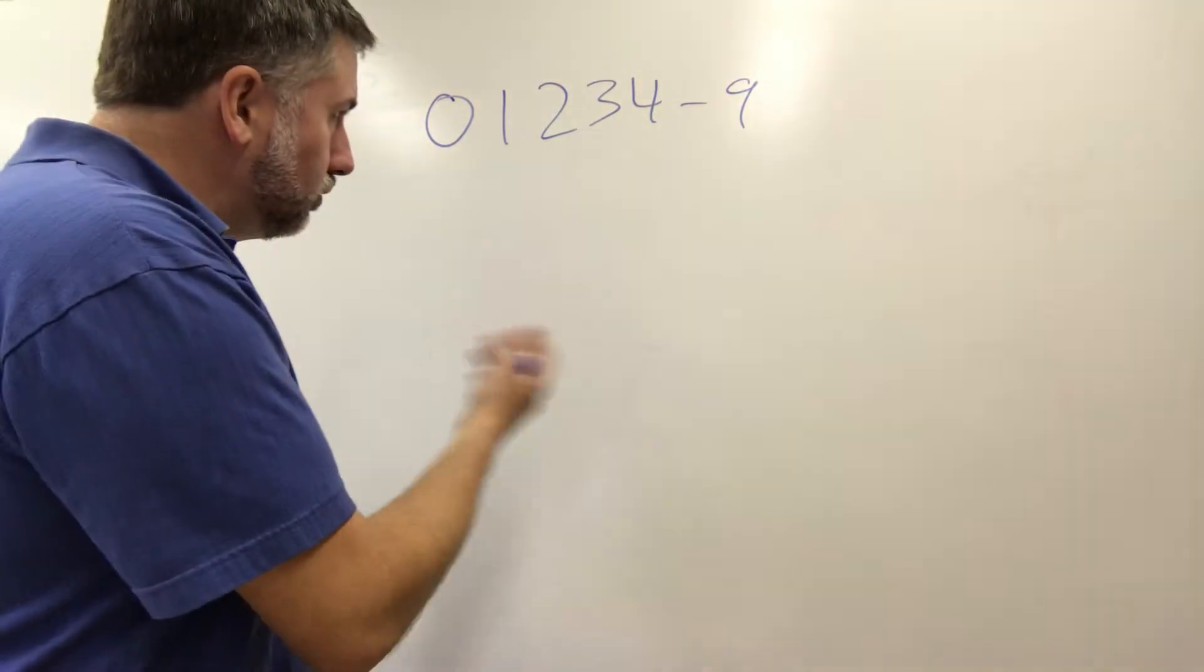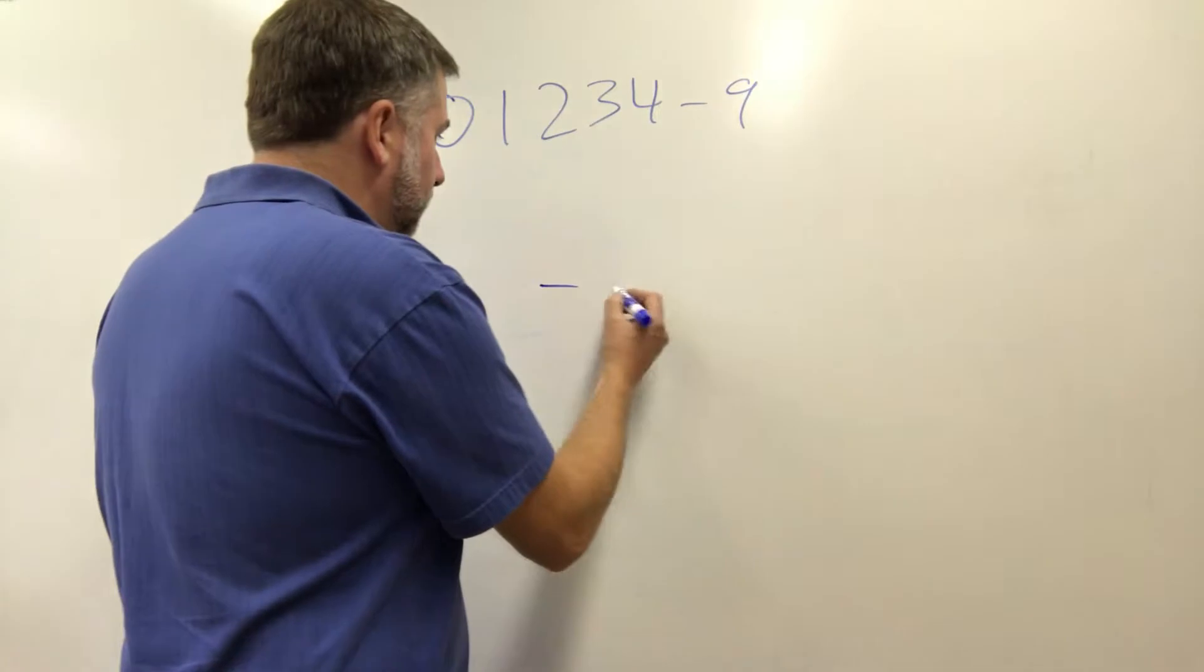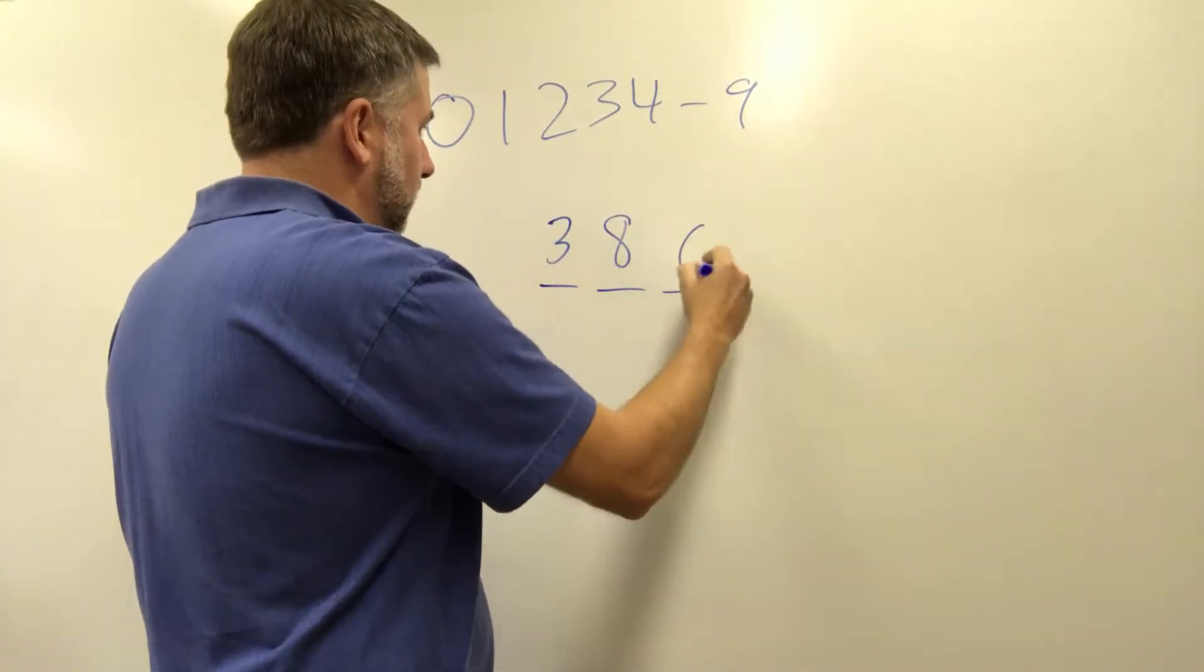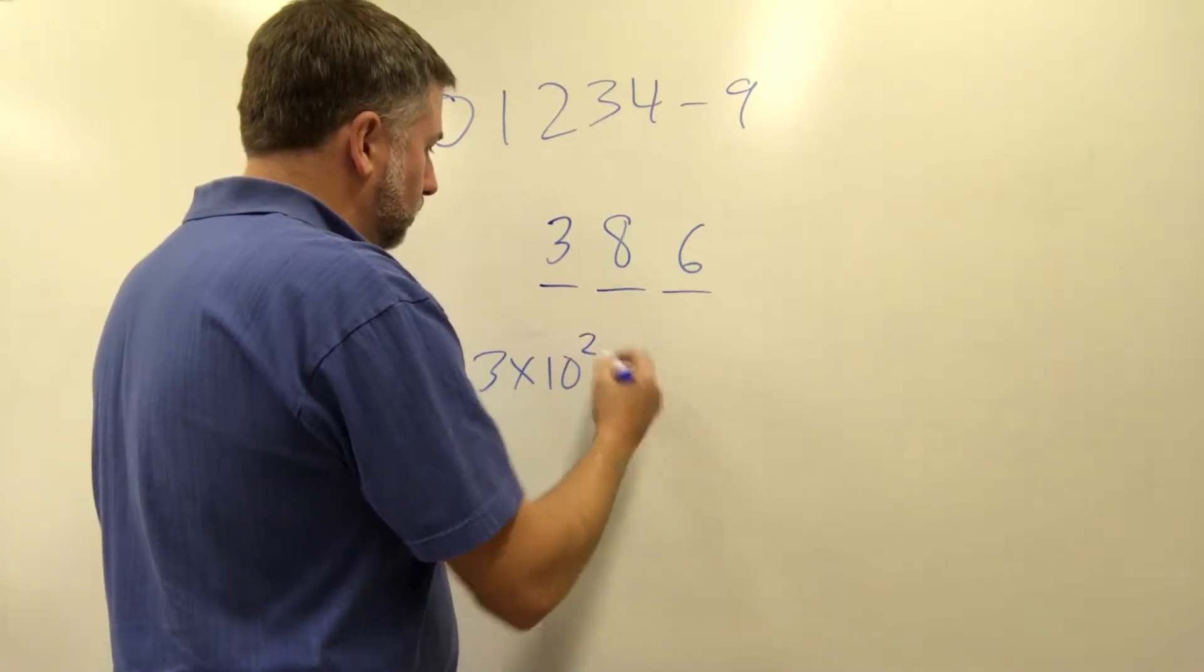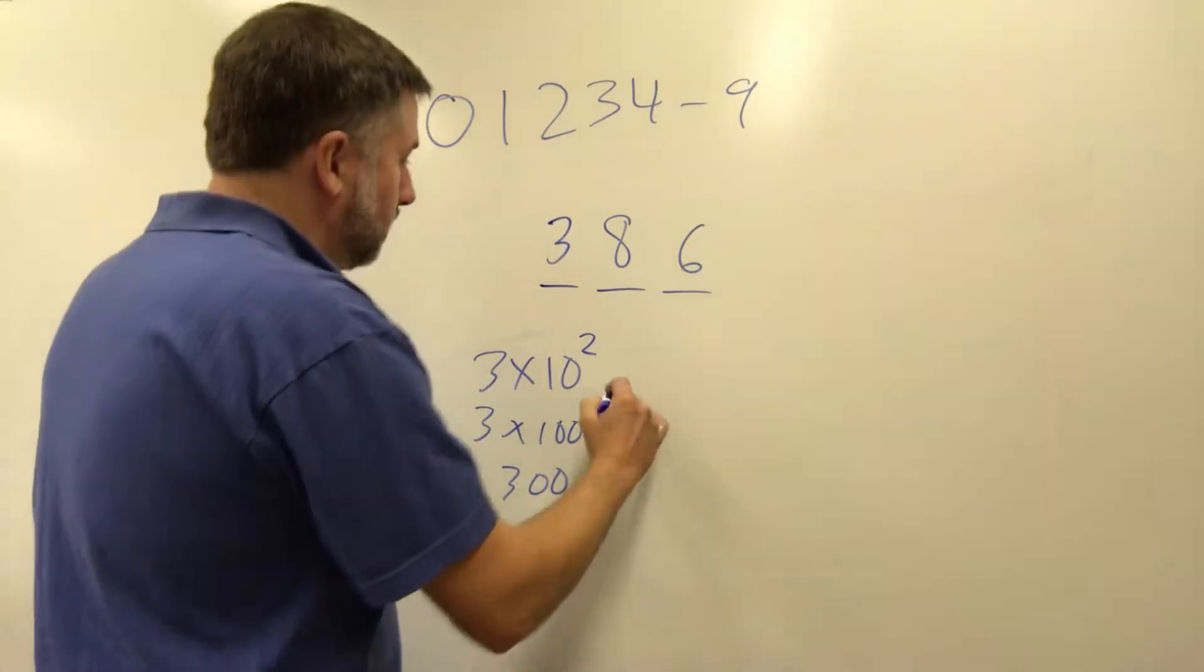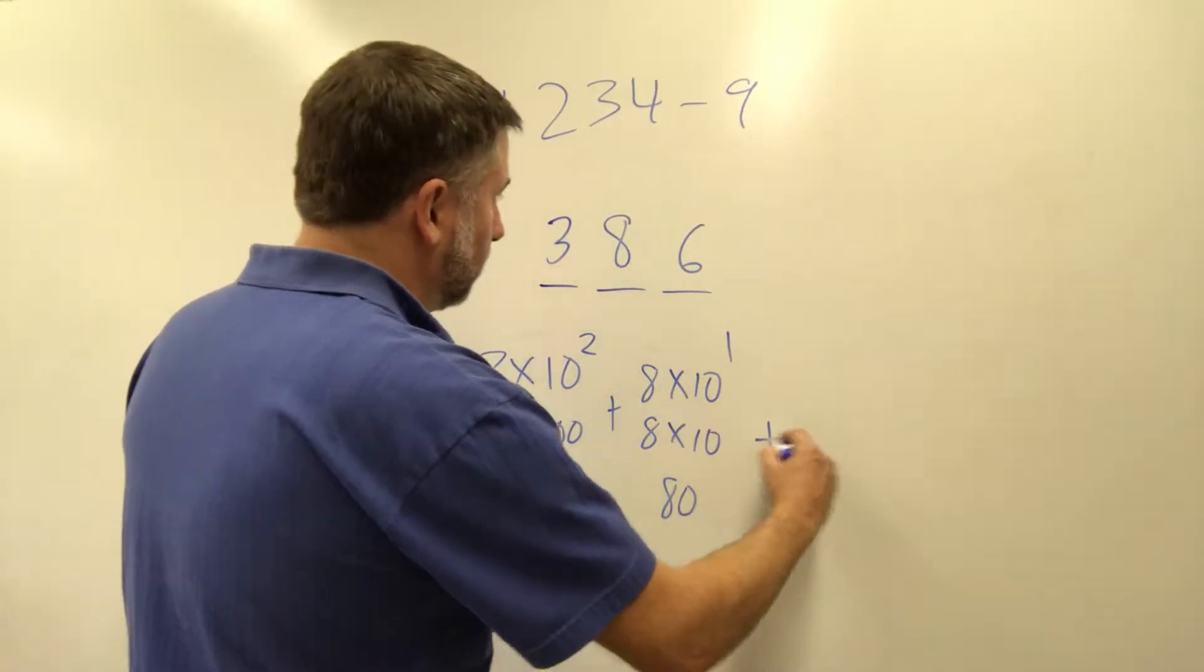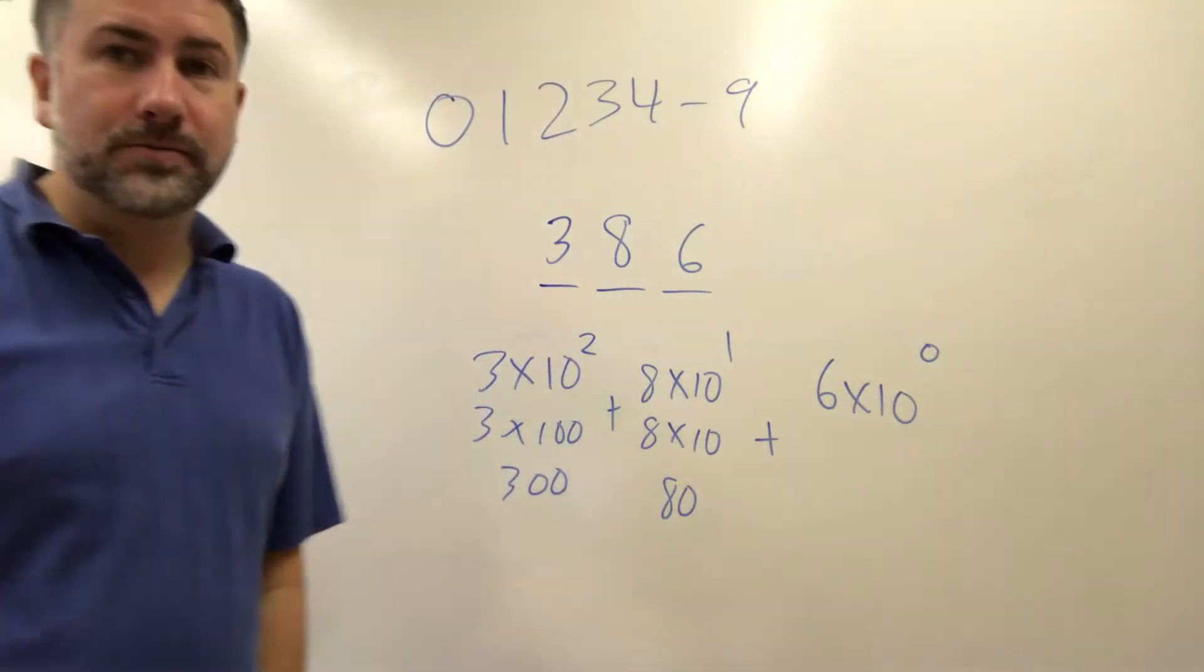What we usually do in base ten mathematics is we have different places and each of these places corresponds to some power of ten. So if we have 386, this is three times ten to the two, or three times a hundred, or 300, plus eight times ten to the one, or eight times ten, or 80, plus six times ten to the zero. And this is how we represent place value.